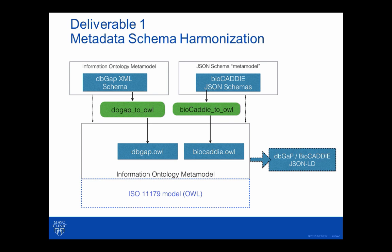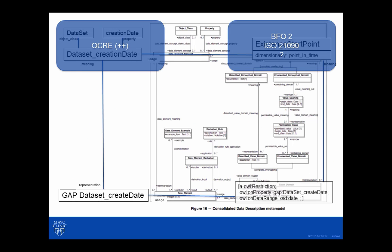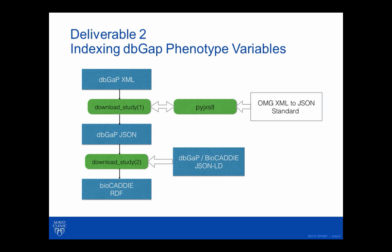Our goal in the end is to come up with a set of equivalent or similar statements that we can actually produce as a JSON-LD description of the dbGaP–BioCADDI alignment. The next step was: can we use this JSON-LD description to actually convert study descriptions from dbGaP? We have a tool that goes out to dbGaP, fetches study descriptions, converts them into standard JSON using an ONG spec, and then uses the JSON-LD produced in the first experiment to try to convert it into BioCADDI RDF.